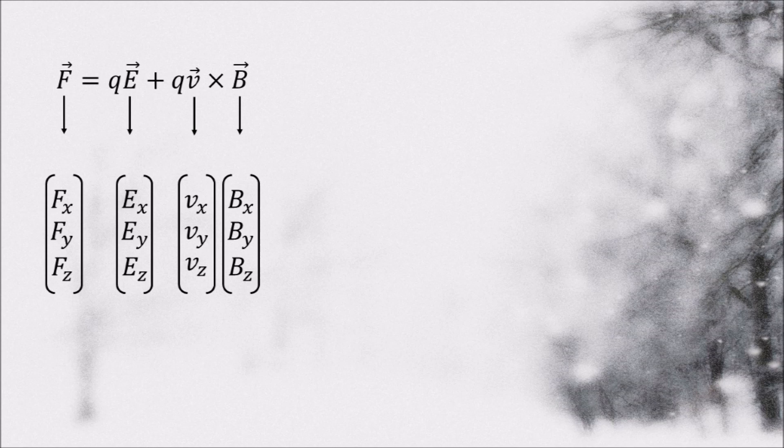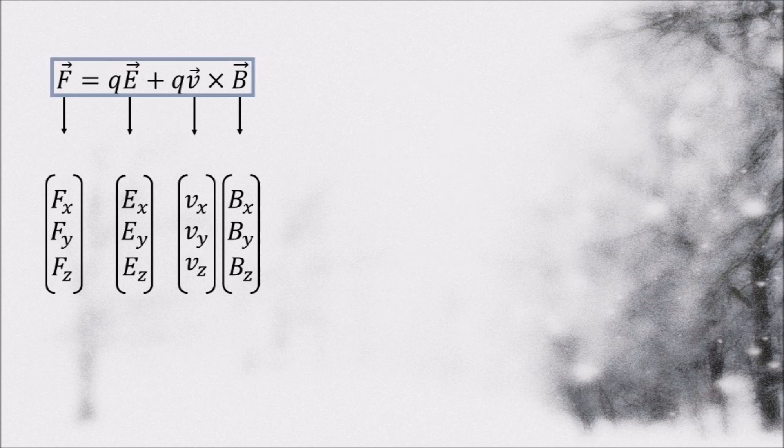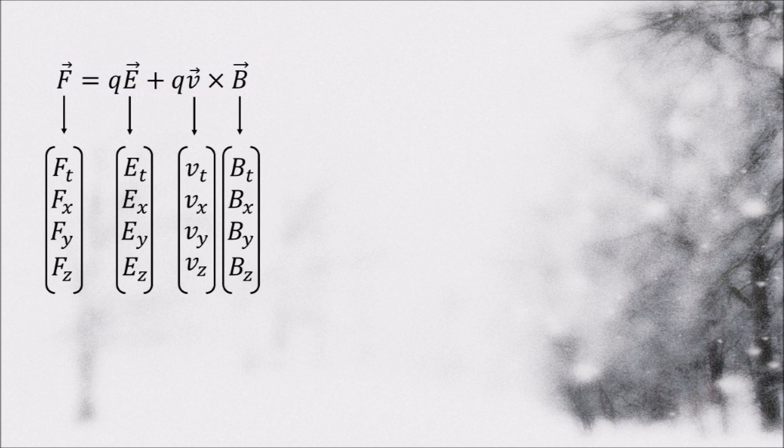Since these vectors are three-dimensional, they cannot be relativistic. Relativistic vectors are always four-dimensional. They are referred to as four vectors. We can fix this by assuming that this expression is only a subset of some other four-dimensional expression. But this is still not good enough.